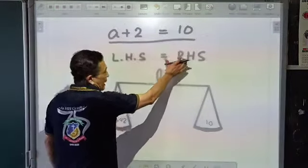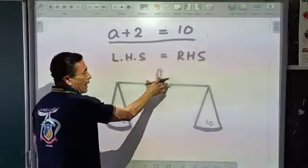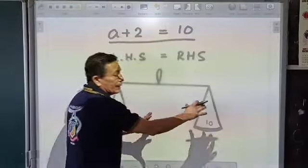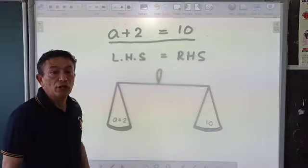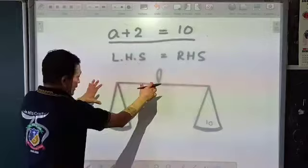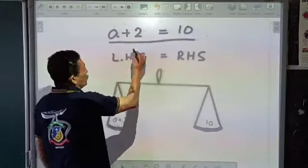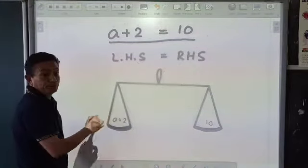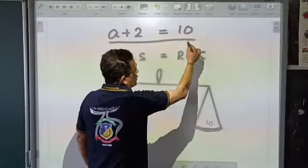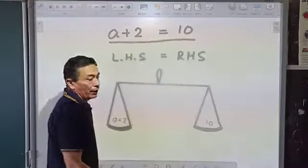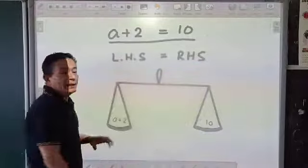Keeping this in mind, if I take the equation and look at it in the form of a scale, Taraju. The a plus 2 which is on the left hand side I am putting it here, and 10 which is on the right hand side I am putting it here. Which means it will be balanced.